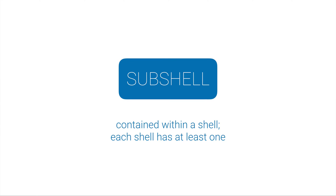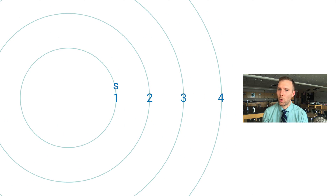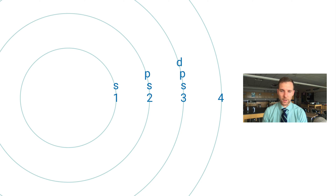I'd like to focus on the first four shells. Each shell has a number of subshells — more precise locations. The first shell, closest to the nucleus, has only one S subshell. The second shell has an S and a P subshell. The third shell has S, P, and D. The fourth shell has four subshells: S, P, D, and F — with F being the biggest.